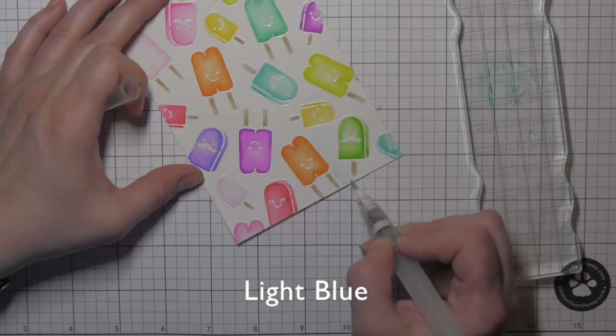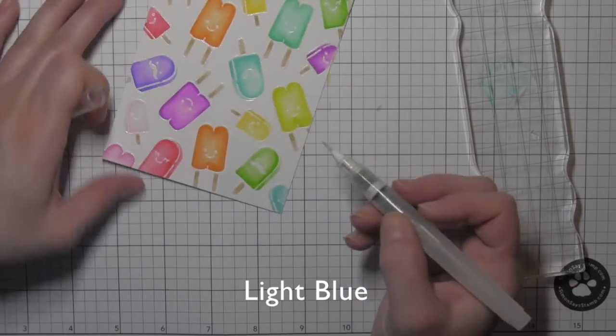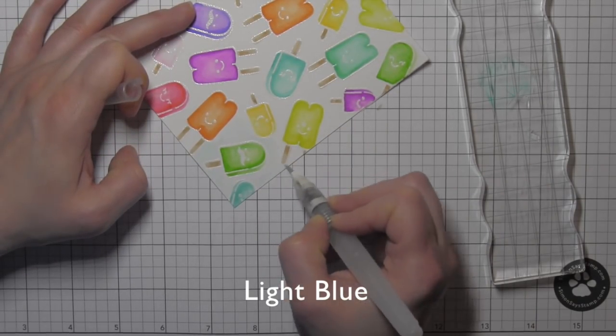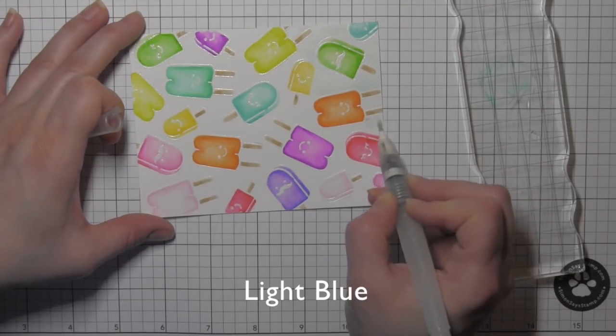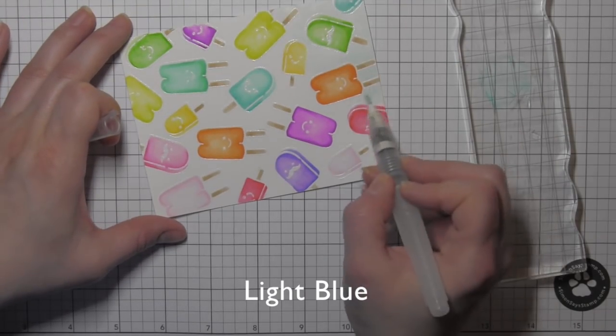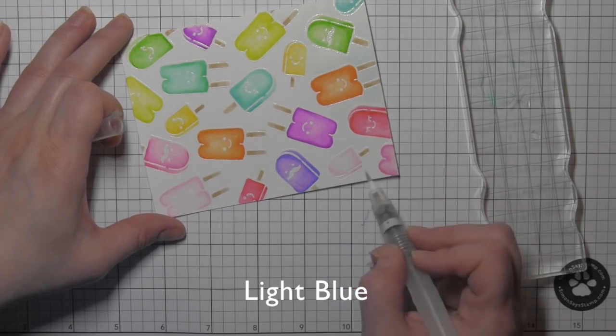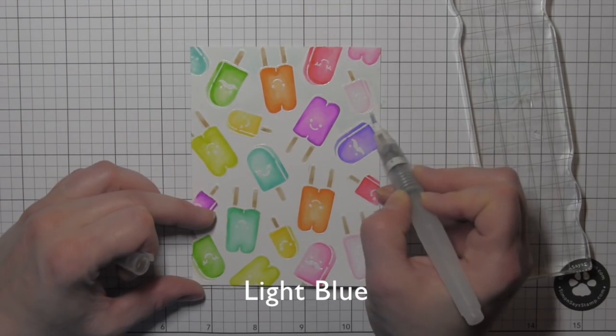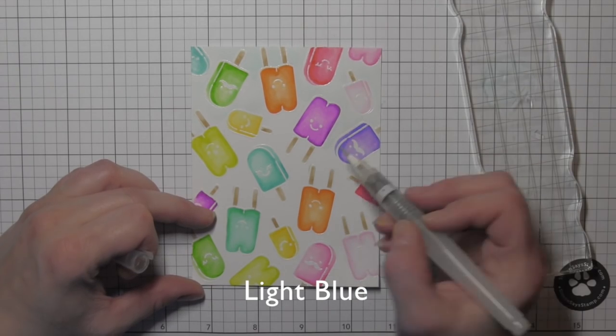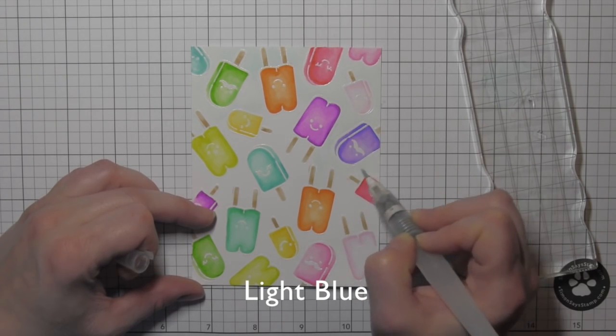I missed a couple places I saw, so go ahead and fill those in. Next I took a little of the light blue Zig Clean Color Real Brush marker and placed it on an acrylic block and then squirted some water on that to water it down even more, and then I'm picking it up with my water brush and coloring in the background around my popsicles.